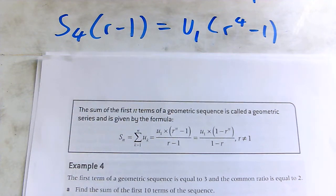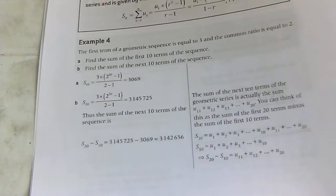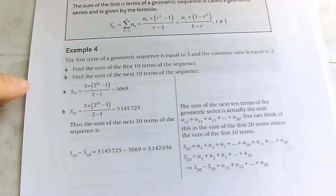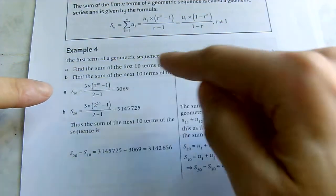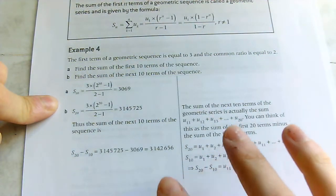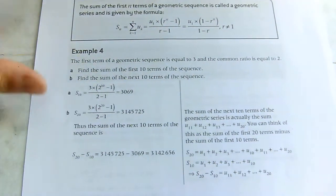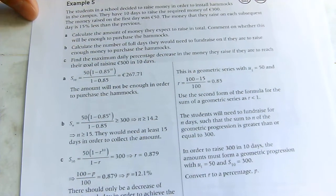That's the formula you're going to use to sum geometric sequences. There's example four in the notes which I'm not going to go through — I want you to look at that yourself and see if you can spot where the values have come from. Essentially it's just plugging the required numbers into this formula, so look through that and make sure you can get the answers.